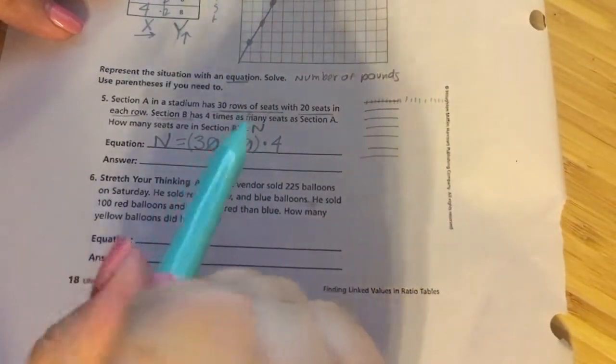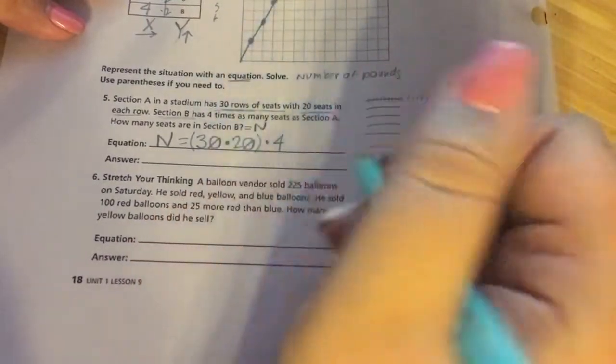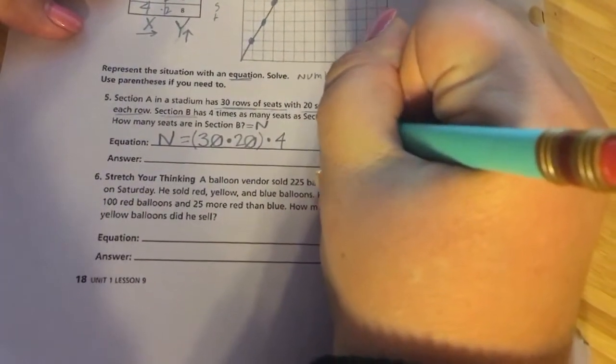I'm going to be multiplying. So I'm going to multiply 30 by 20. And then I'm going to take that and multiply that product by four.